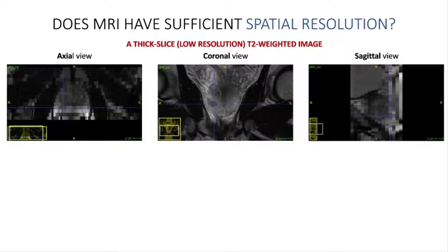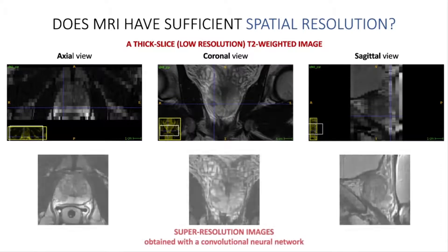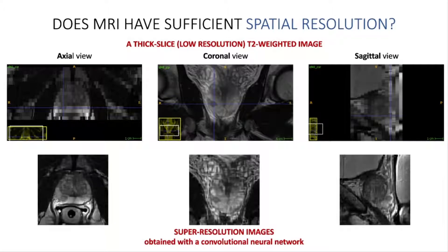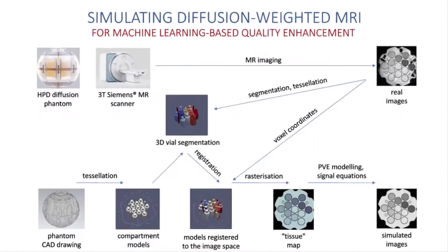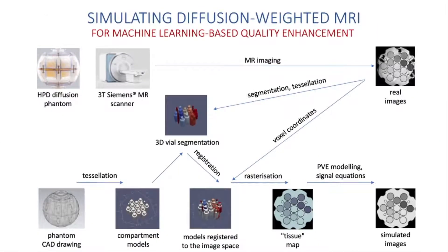In our previous study, we showed how deep learning models trained on simulated structural images can help to reconstruct super-resolution images using information from the acquired low-resolution ones. In our current study, we make the first step to extend that idea to functional imaging by simulating diffusion-weighted images. We achieve that using a diffusion phantom, its computer-aided design model, and MRI signal equations.